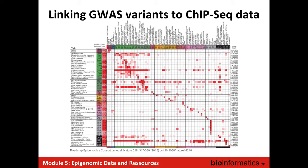So why is all of this relevant? This is one example from the NIH Roadmap, which did systematic profiling across lots of tissues. On this list you have various diseases — each corresponding to a GWAS study that identified regions in the genome associated with conditions like obesity or LDL cholesterol. As I mentioned, most of these regions associated with disease were non-coding.